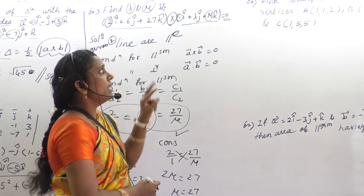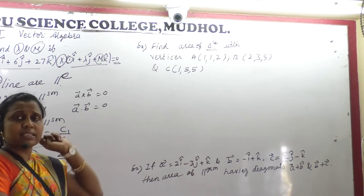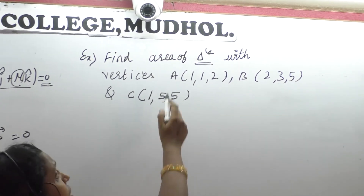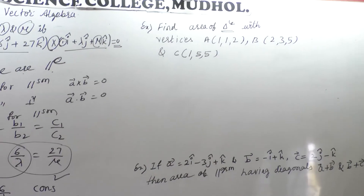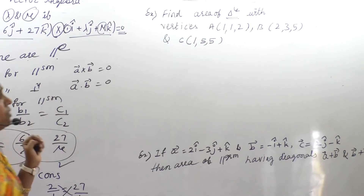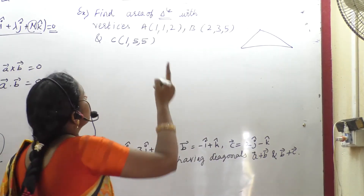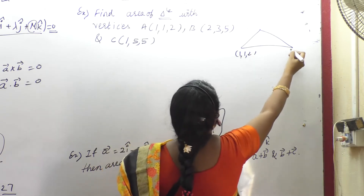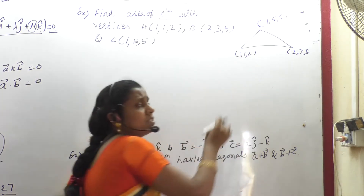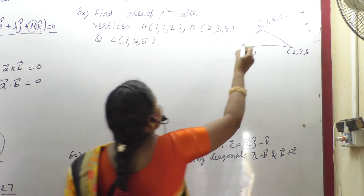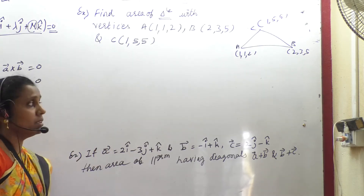Next: find area of a triangle with vertices. Three vertices will be given, and we use the formula area = half into |A cross B|. I will make a rough sketch of a triangle with 3 points: (1,1,2), (2,3,5), and the third vertex. Label the vertices A, B, C — this is sufficient.